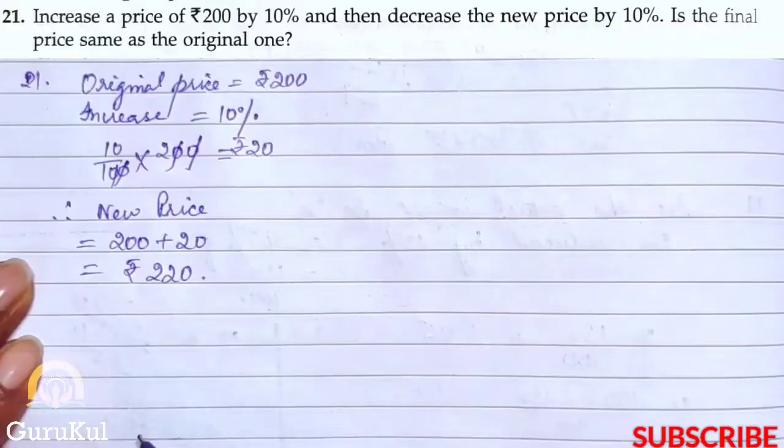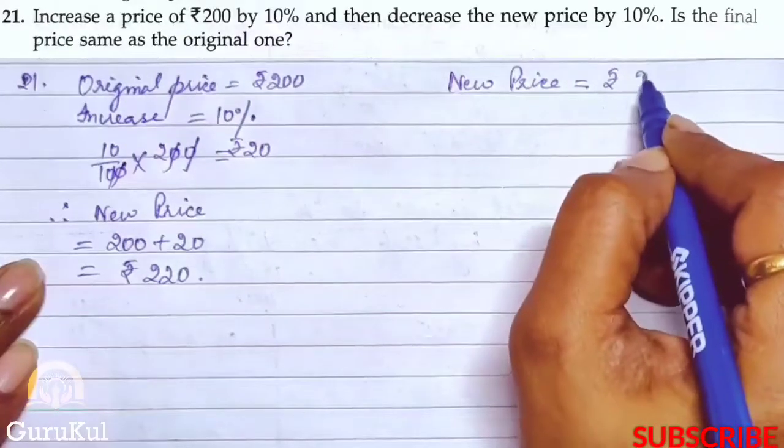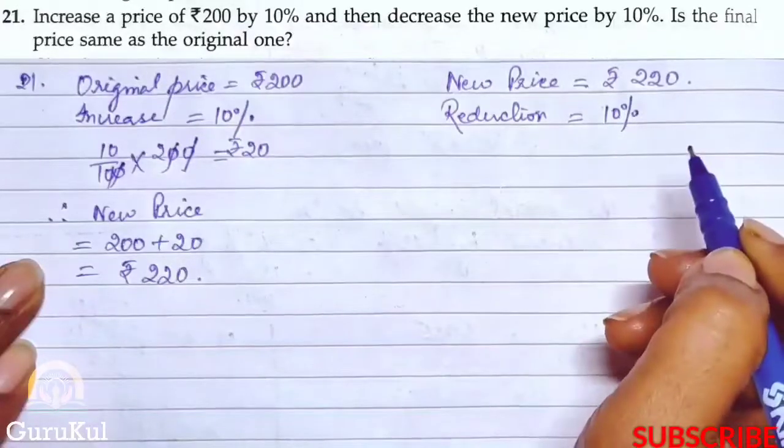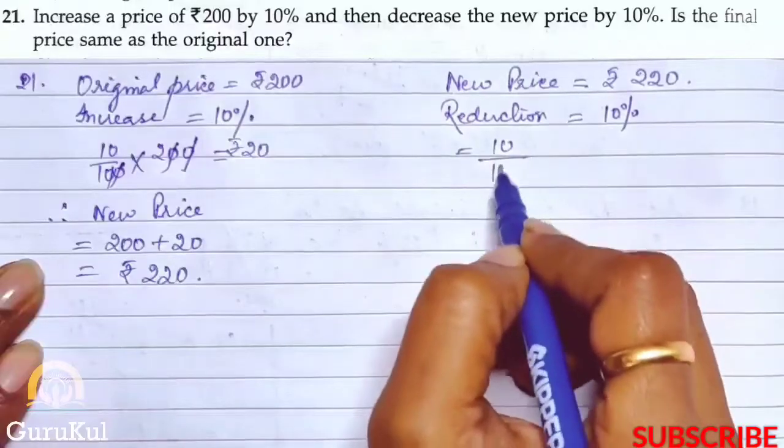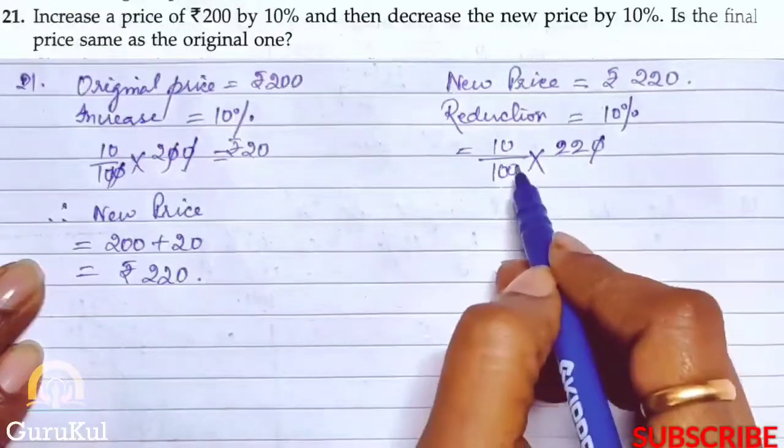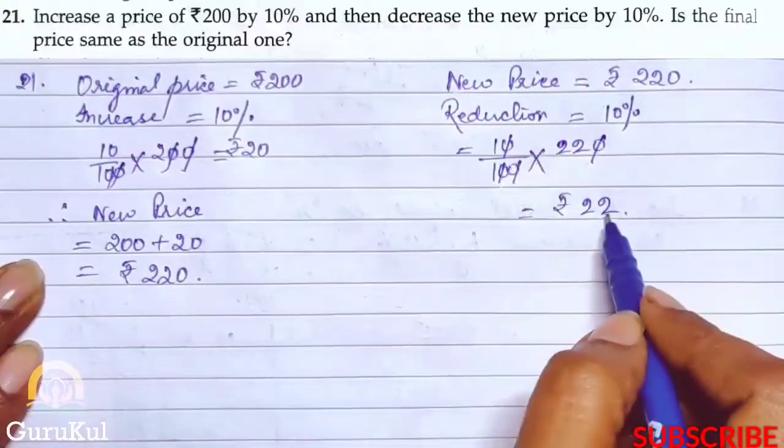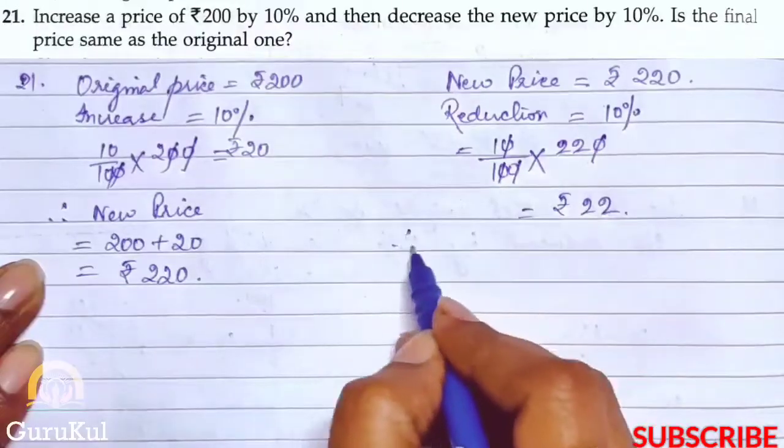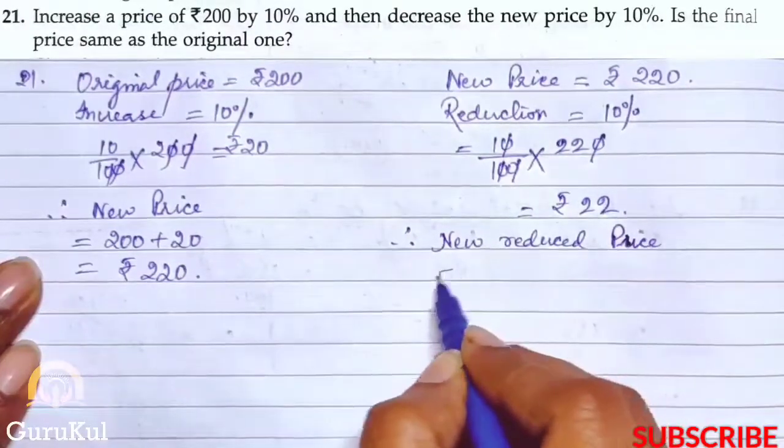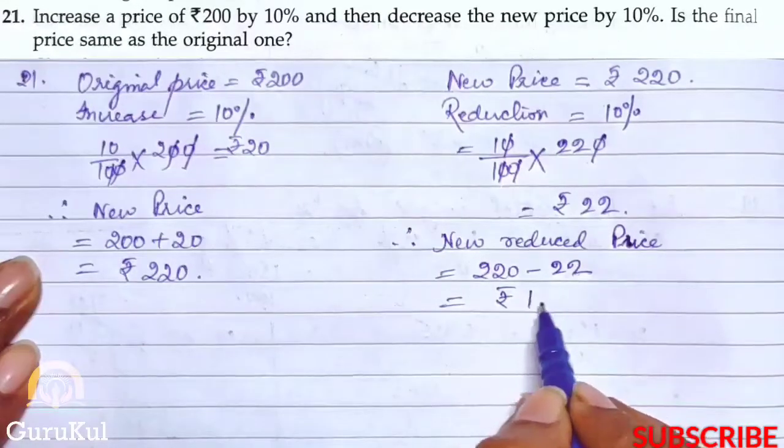Now decrease the new price by 10 percent. New price is equal to rupees 220. Reduction is 10 percent. That is 10 percent of the new price, which gives rupees 22. This is a reduction, so we reduce from actual price. Therefore, new reduced price is equal to 220 minus 22 that gives us rupees 198.